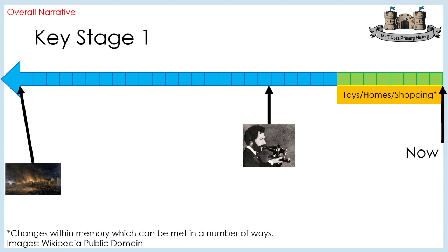For the Great Fire of London, sometimes I might ask the children, 'I wonder why nobody phoned the fire brigade?' My logic with this is to help them build a better understanding of what the world was like when it happened. One thing that's probably very obvious to us as adults, but wouldn't be to children necessarily, is that there were no telephones. The additional picture in the middle that you can see on the timeline is the invention of the telephone. And because I've got my clear scale, I can show the interval between the fire happening and the telephone being invented.